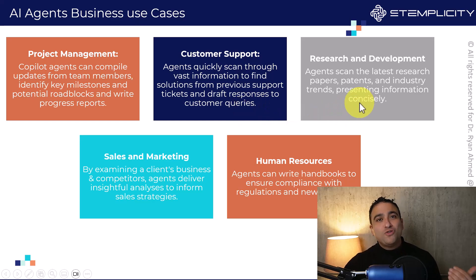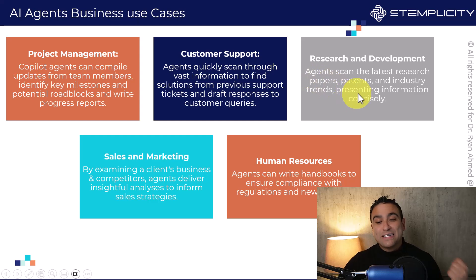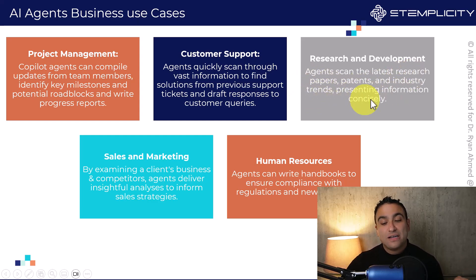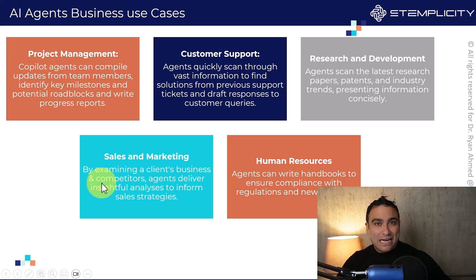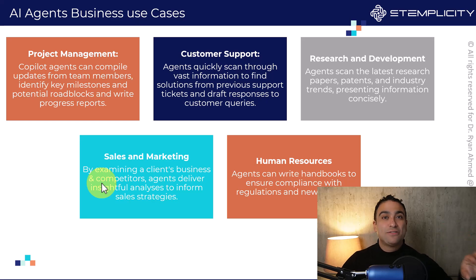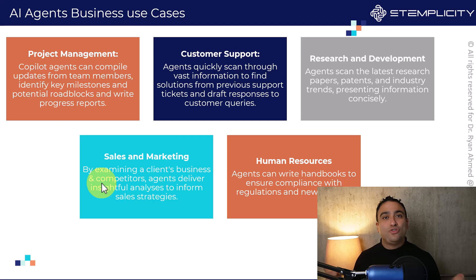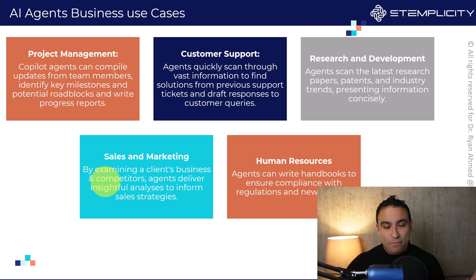You can also use agents for research and development — agents can scan the latest research papers, patents, and industry trends, and present information in a concise manner. You can use agents in sales and marketing to perform competitor analysis, identify strategies used by competitors, and ask an AI agent to set your marketing strategy based on your market position compared to competition.